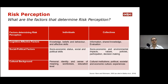Moving on to social and political factors, at the individual level the main factors include socioeconomic status and social and political skills. For collectives, this expands to socioeconomic and environmental impacts, values, policies, participation, and decision making. From the cultural background, at the individual level it concerns personal identity, sense of meaning, worldviews, and education levels. On the collective side, this includes cultural institutions covering political, societal, and economic culture, and experiences.